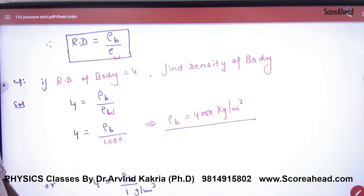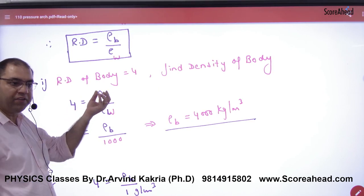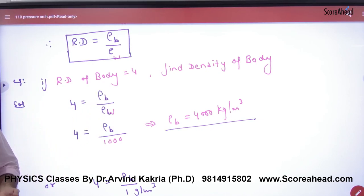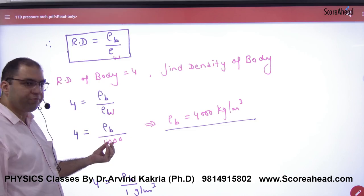Like in a numerical problem, if any body's relative density is 4, then density of body divided by density of water equals 4. If you are working in such a system, you can put the density of water as 1000. Body density will come out.